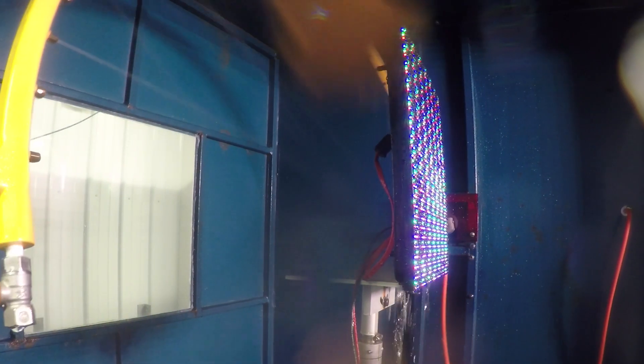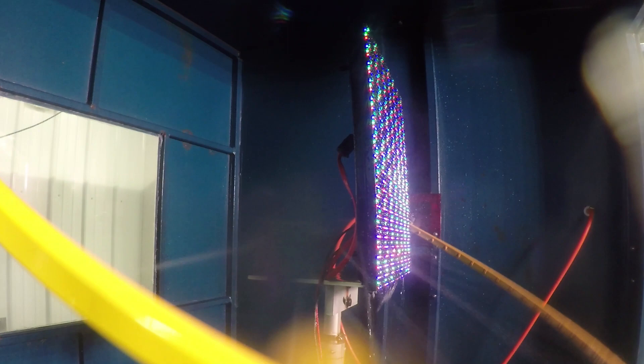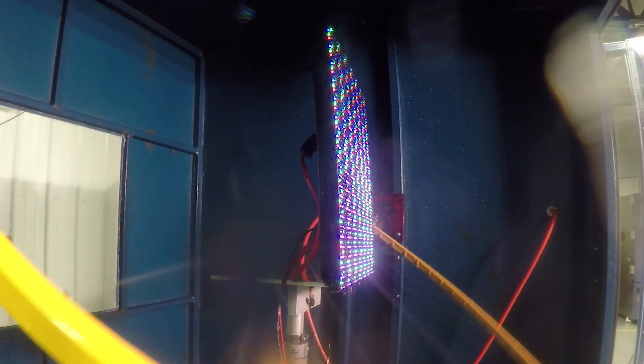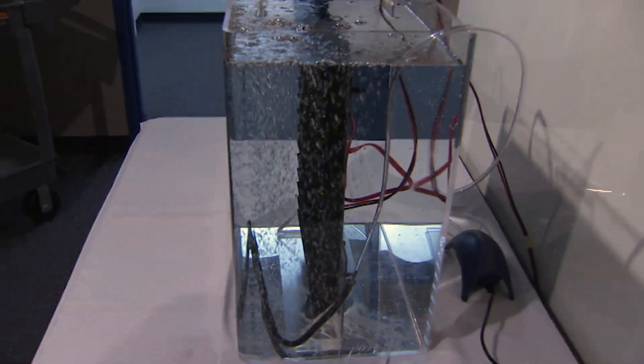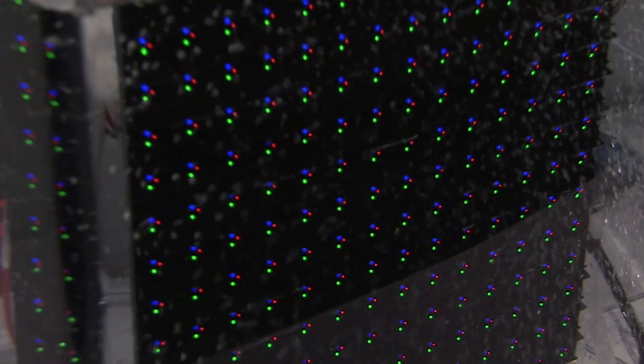Our technicians then test every outdoor display model for rain and water defense to ensure complete protection against precipitation, even submerging products to ensure 360 degrees of complete weather defense.